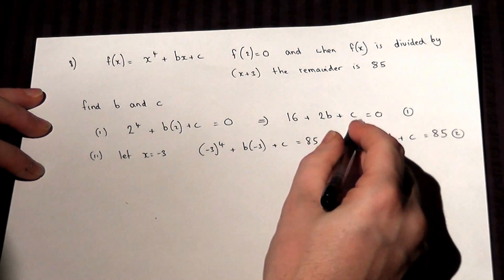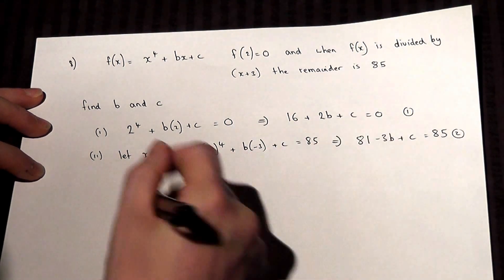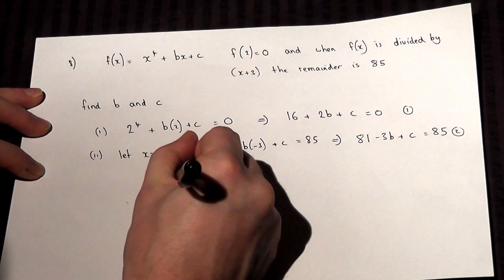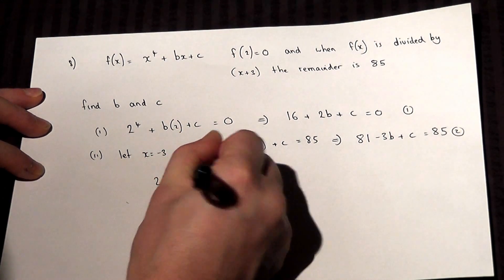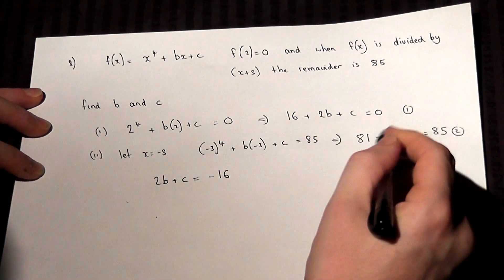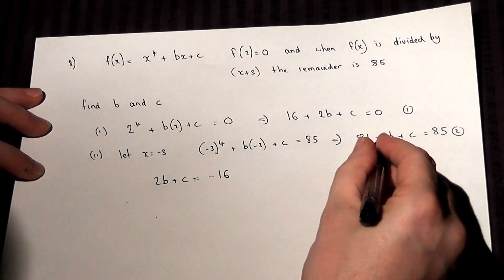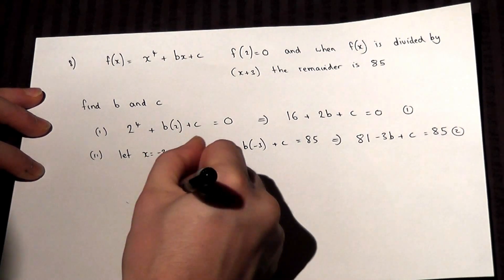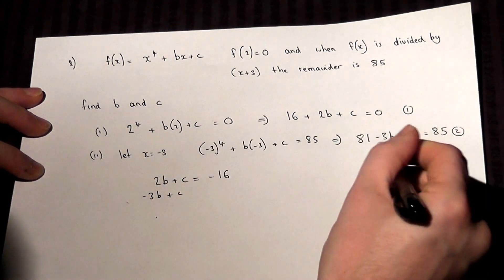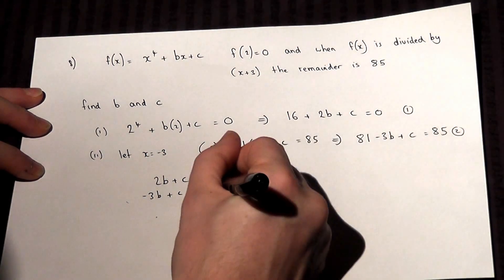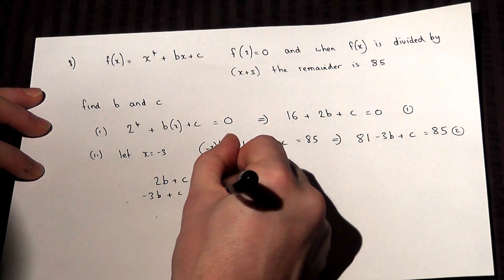Now, to make this a bit simpler, equation 1 becomes 2b plus c equals minus 16. Equation 2 becomes minus 3b plus c equals 4.